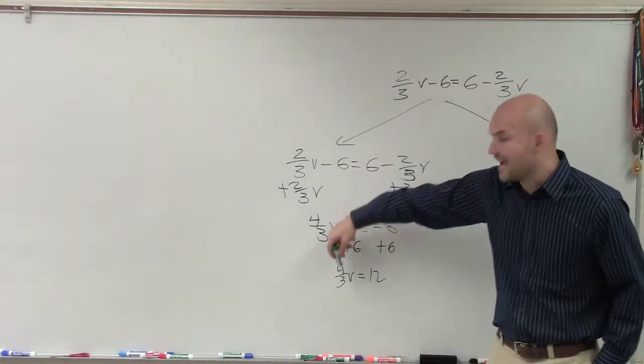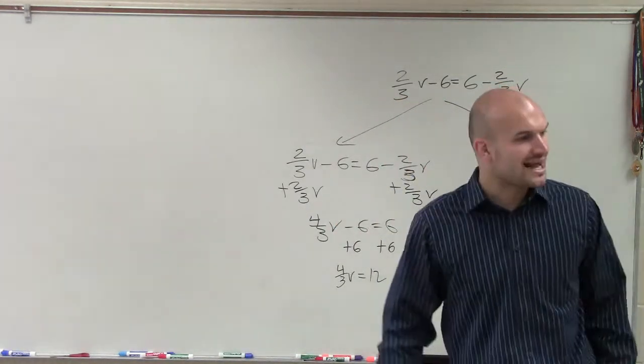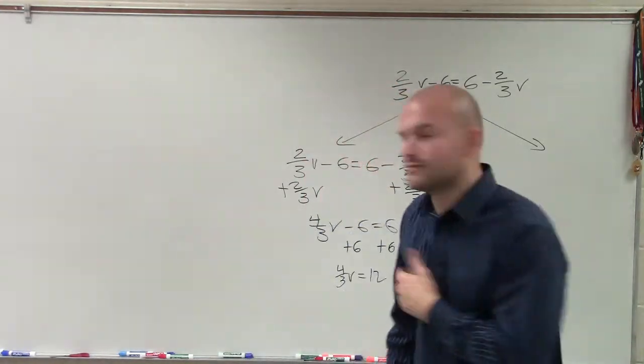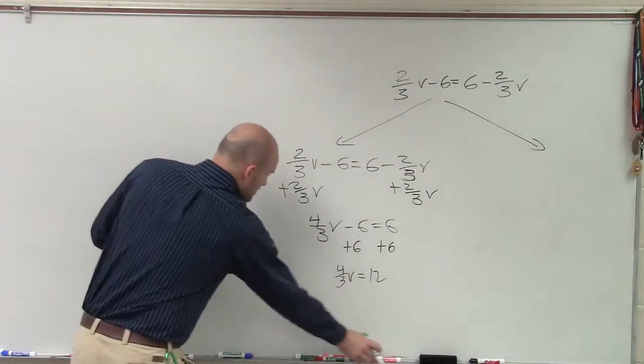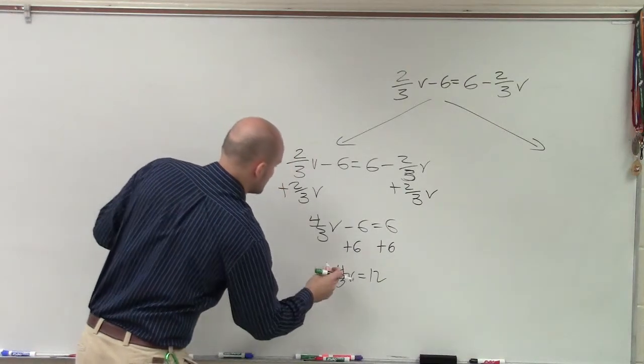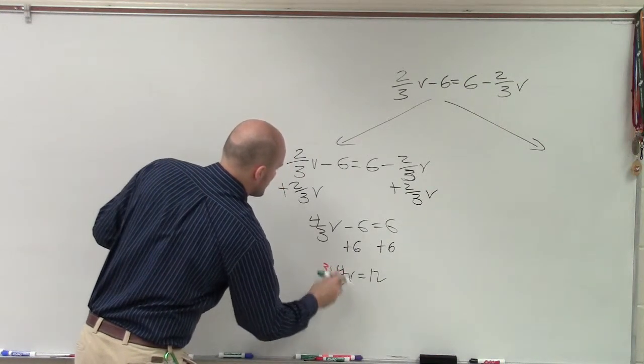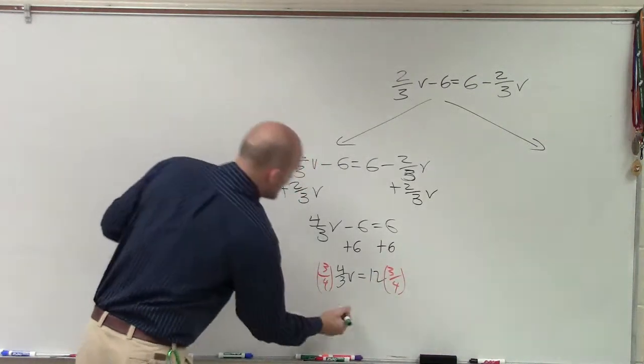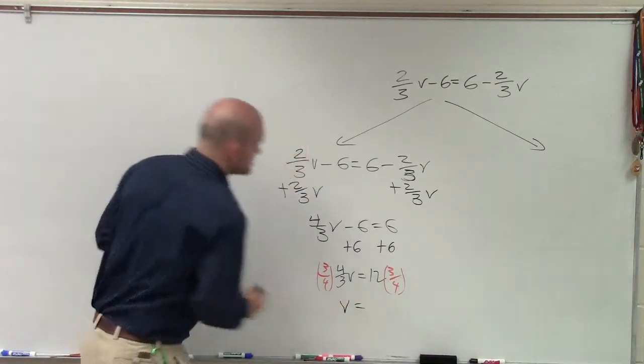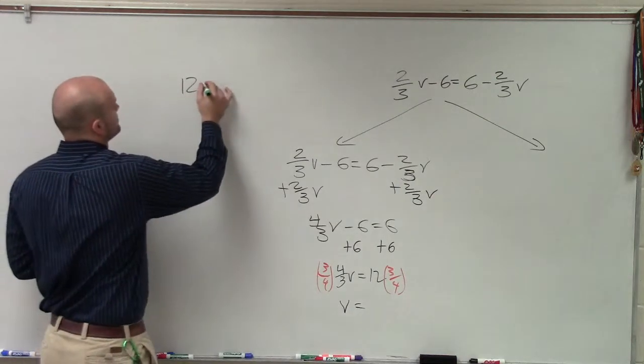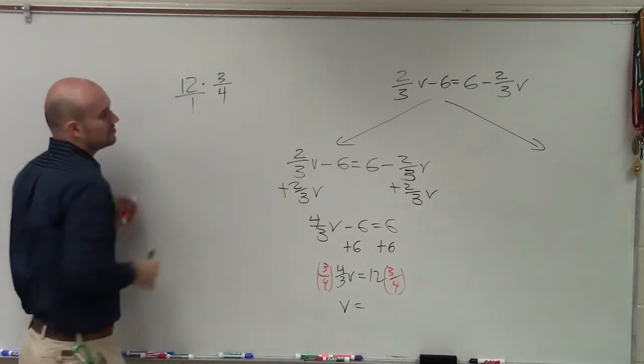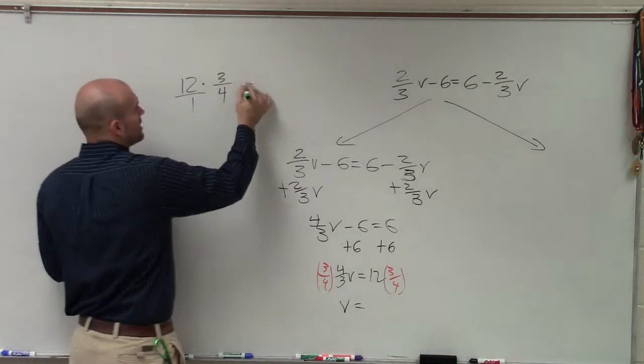Then I have my v being multiplied by a fraction. To undo multiplication by a fraction, I can divide, or we can just say multiply by the reciprocal, which is three-fourths. So I multiply now by three-fourths on both sides, and I'm left with v equals 12 times three-fourths. How do we do this? Change it to a fraction, multiply across.